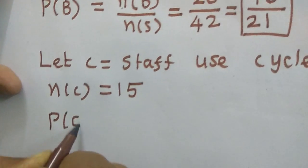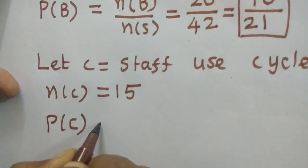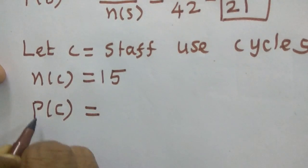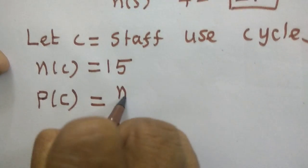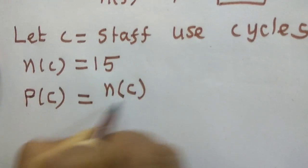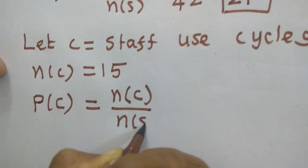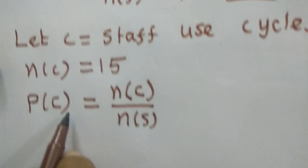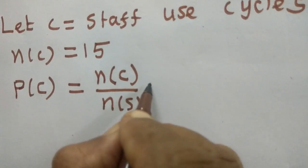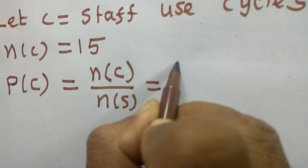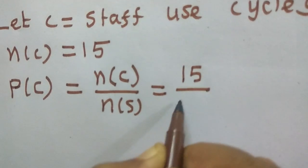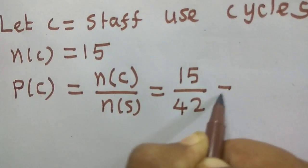Now we are going to find out the probability. P of C equal to N of C. Don't forget to write the alphabet what you are using here. N of C divided by N of S. Because already N of S is here. So P of C equal to N of C divided by N of S. What is N of C? 15. What is N of S? 42.